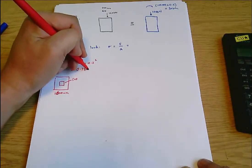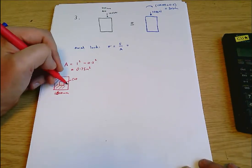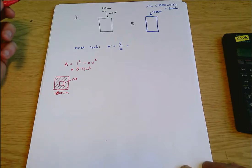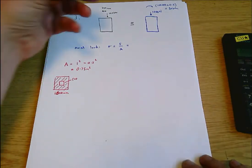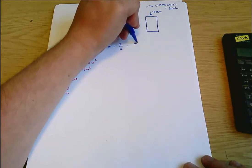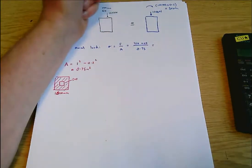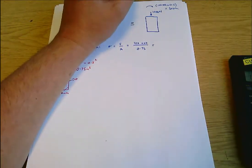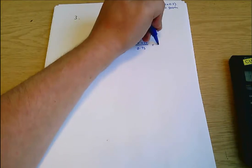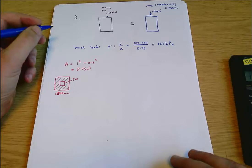To be precise, that's the area of this shaded section here. So then we can say stress is force over area, which is 100,000 divided by 0.75, which comes out at 133.33 kilopascals.